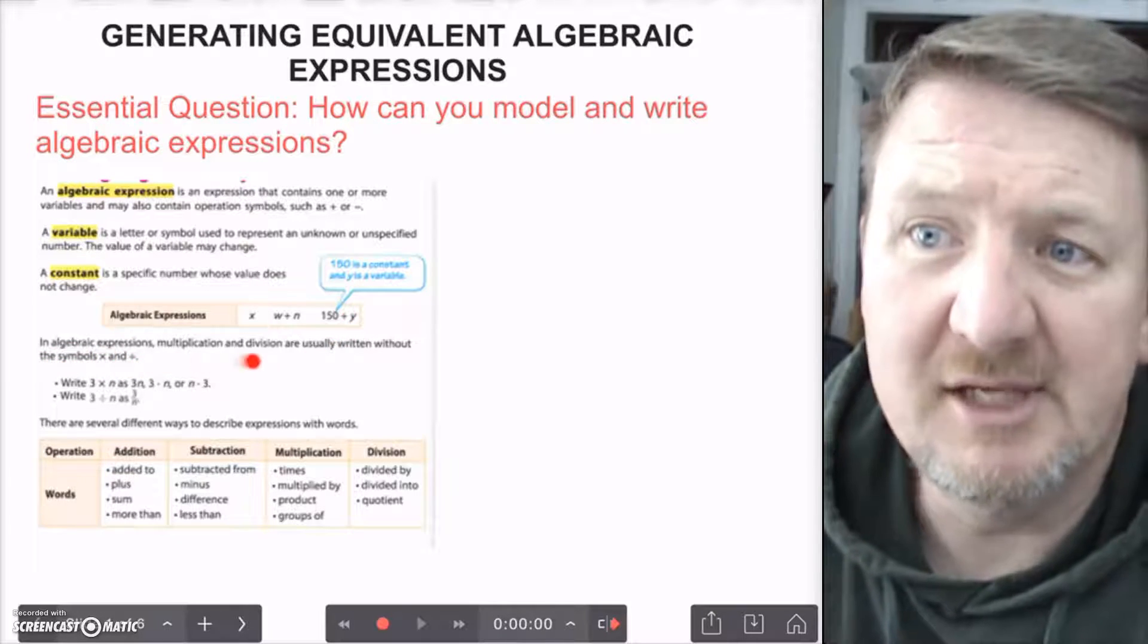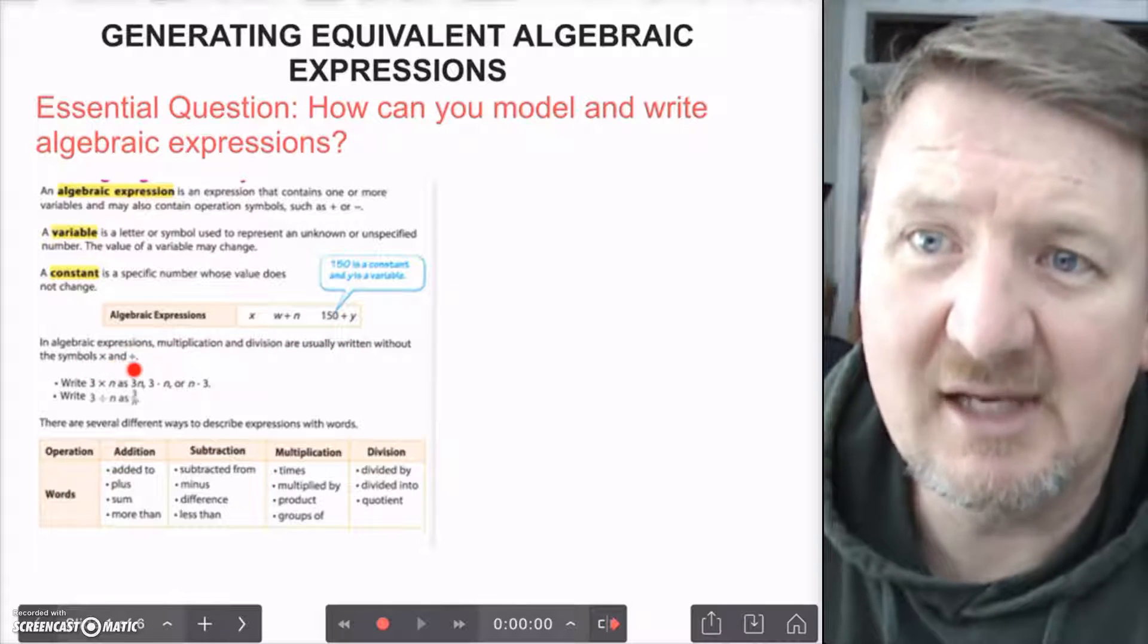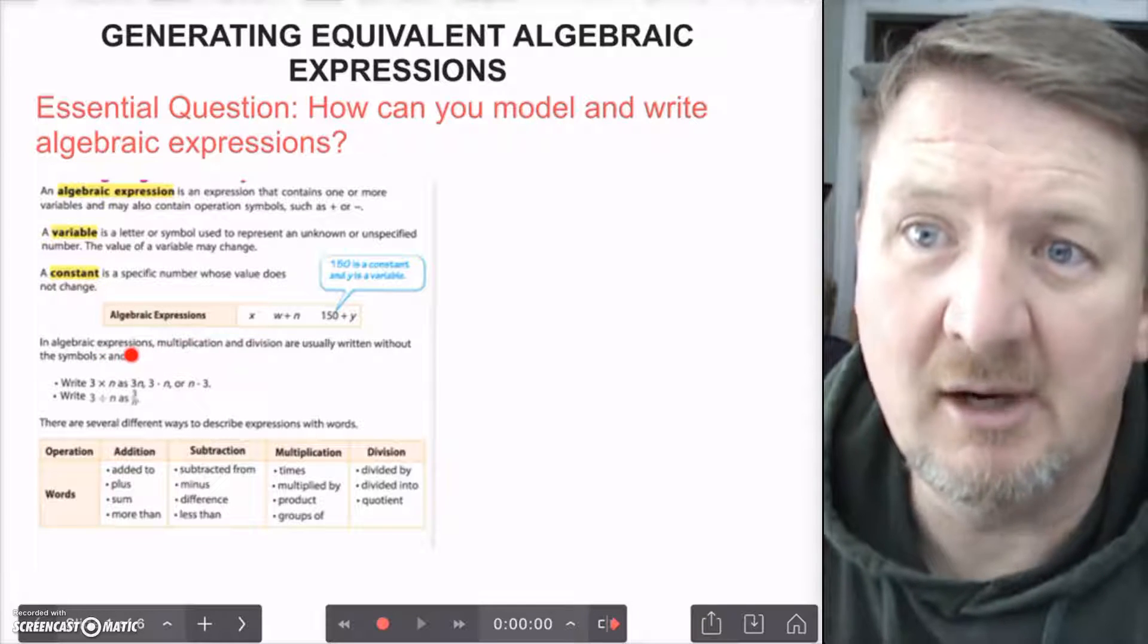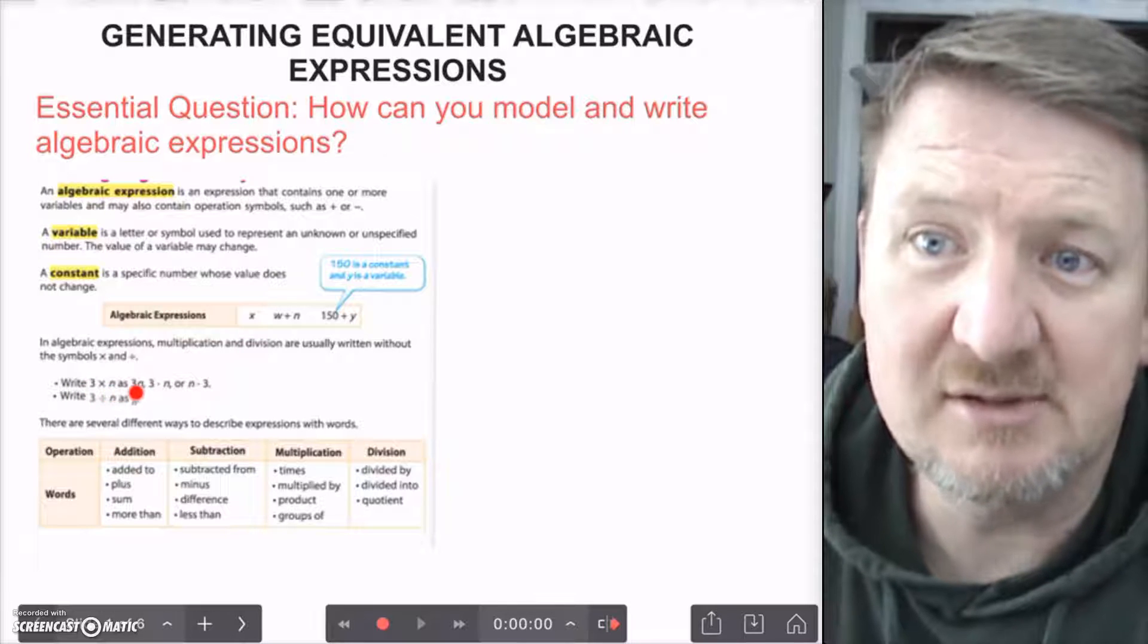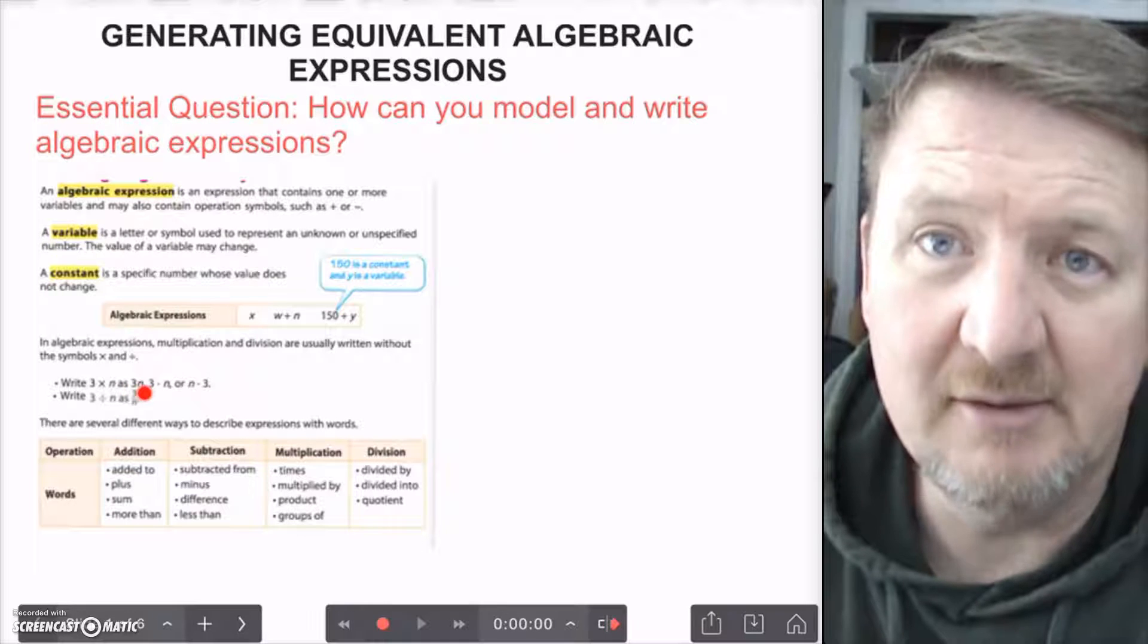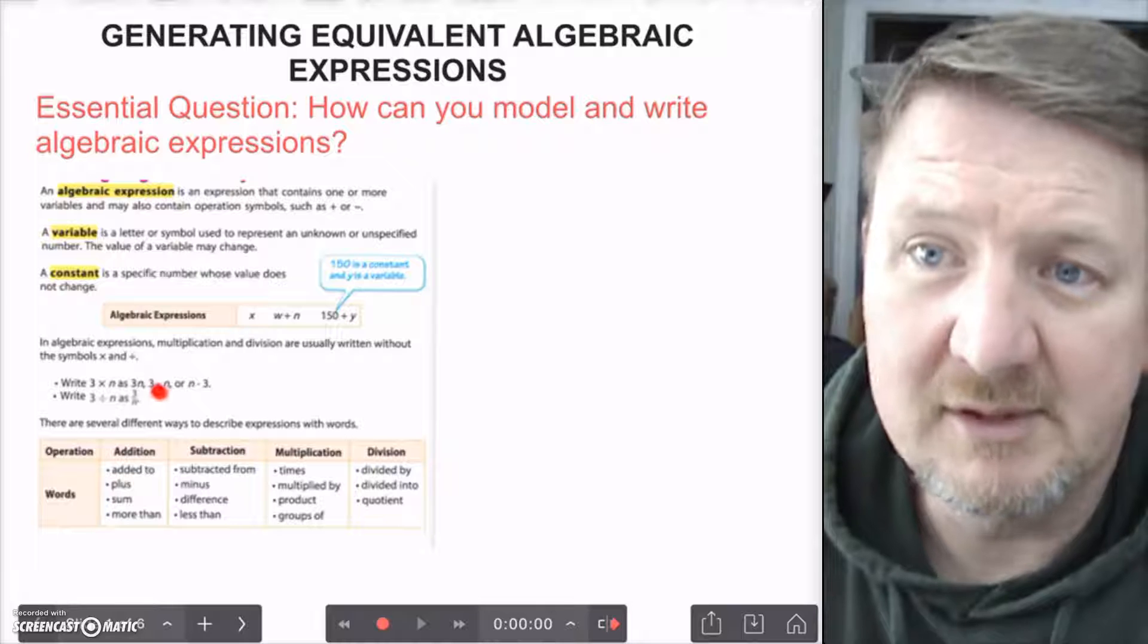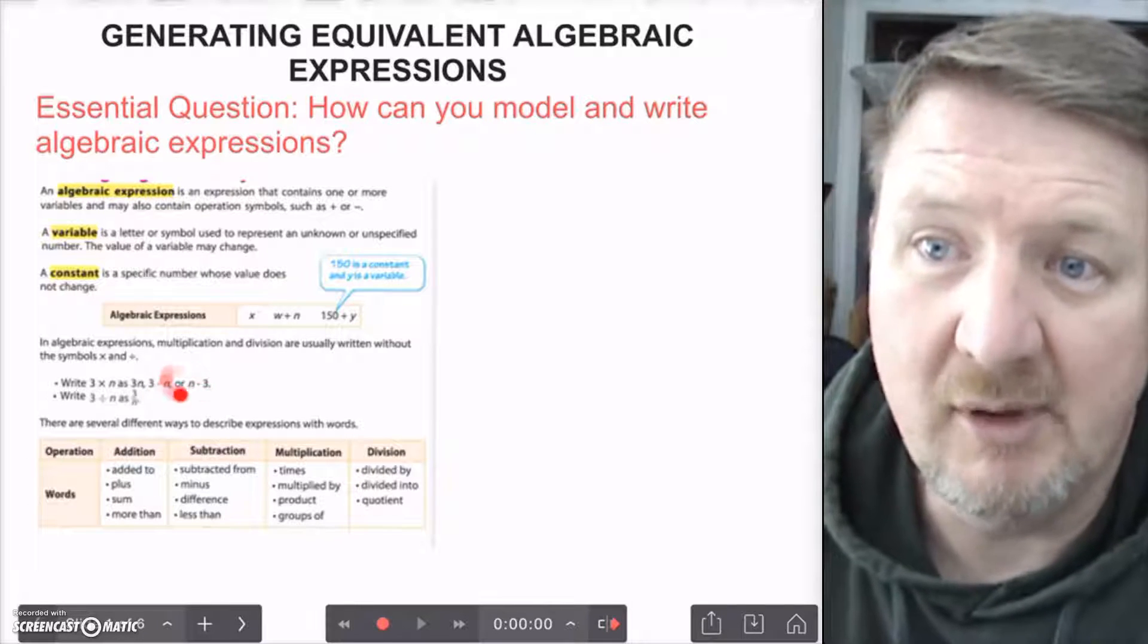So algebraic expressions - x is your variable. You can have it just as x. You can have w plus n. We don't know what w is, and we don't know what n is, but they're two different amounts. 150 plus y - 150 is a constant. We know what 150 is. We've added something else to it. In algebraic expressions, multiplication and division are usually written without symbols, without the x and the division symbol, because they look too much like numbers or letters.